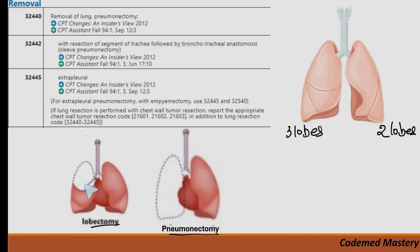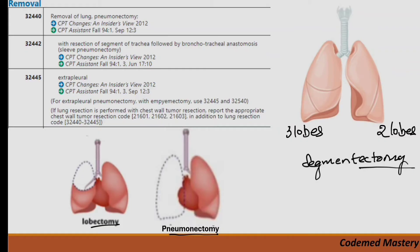Lobectomy is a procedure in which one lobe of the lung is removed. You can see here — this is the right lung with three lobes, and one lobe has been removed — that is lobectomy. Segmentectomy means a segment of the lung is removed. You need to understand these concepts to code correctly.